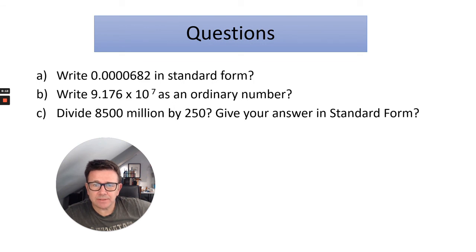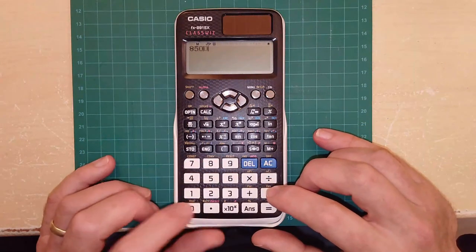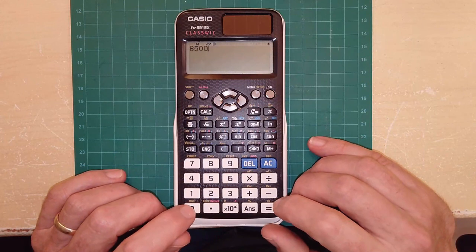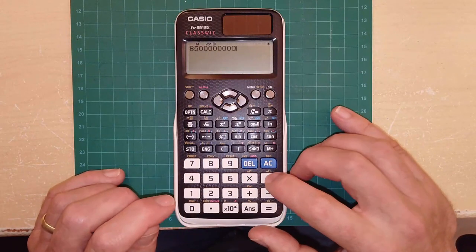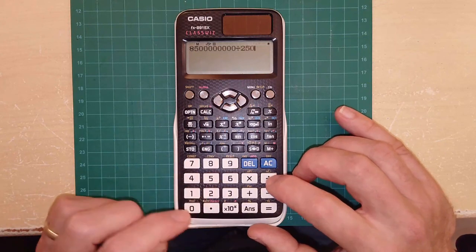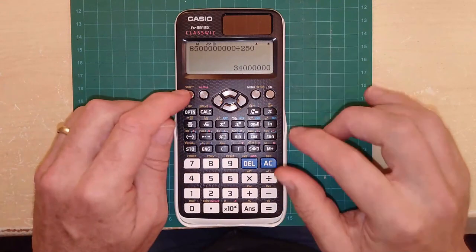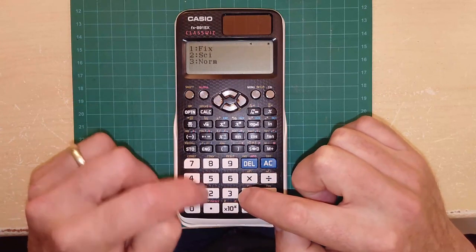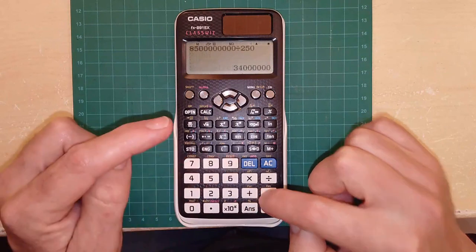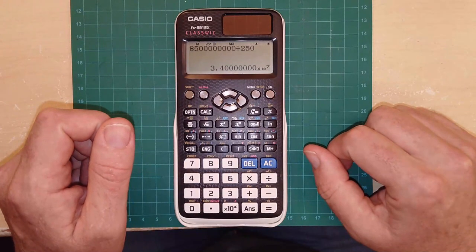Question C: divide 8,500,000,000 by 250 and give your answer in standard form. You could do 8,500 times 10 to the 6 but I'm going to do all the zeros: one two three four five six. Divide it by 250, and that will give me my ordinary number but I want to give it in standard form. So again I go to shift setup, three number format two science notation, then nine, and then I press the equals button and it will give me 3.4 times 10 to the 7.